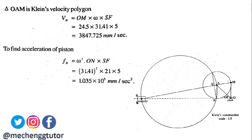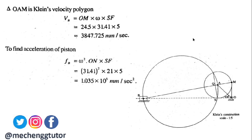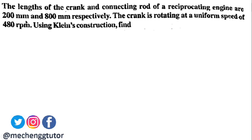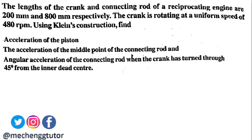In this problem we determined the velocity and acceleration of the slider only, but problems may also ask for the velocity and acceleration of the connecting rod or crank. Now for the second problem: the length of the crank and connecting rod of a reciprocating engine are 200 mm and 800 mm respectively. The crank rotates at uniform speed of 480 rpm. Using Klein's construction, find the acceleration of the piston, the acceleration of the midpoint of the connecting rod, and the angular acceleration of the connecting rod when the crank has turned 45 degrees from the inner dead center.